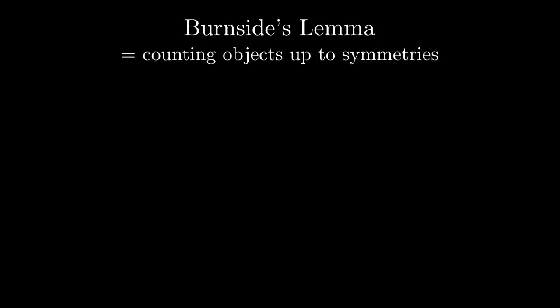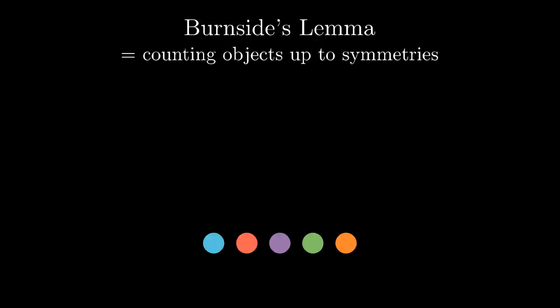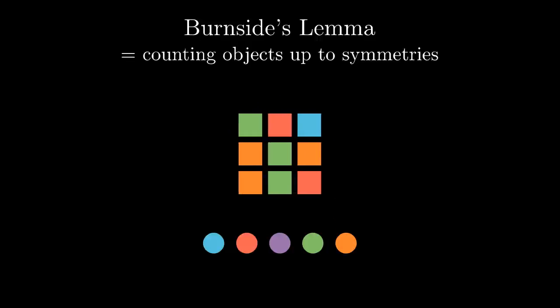Burnside's lemma is a nice combinatorial tool for counting the number of certain objects up to symmetries. A typical showcase problem for the lemma is the following one. We color a table 3 times 3 using 5 colors, and if two tables differ only by rotation or flipping we consider them equal. How many different tables can we get?